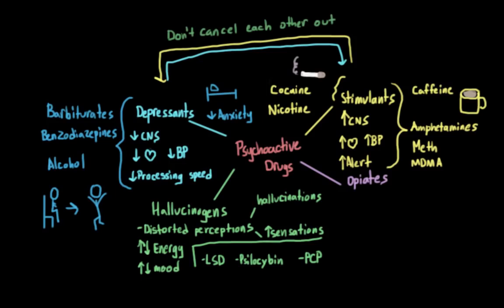The last class of drugs are opiates, sometimes called opioids. These terms are used interchangeably, though there is one small distinction: opiates generally describes natural varieties, while opioids refers to synthetic versions. Like depressants, opiates can depress central nervous system functions — decreasing heart rate and blood pressure, causing relaxation and inducing sleep — which is why they're sometimes lumped under depressants. But there are important distinctions: they work on different neurochemical mechanisms, and opiates have an added feature as an analgesic, meaning they reduce the perception of pain.